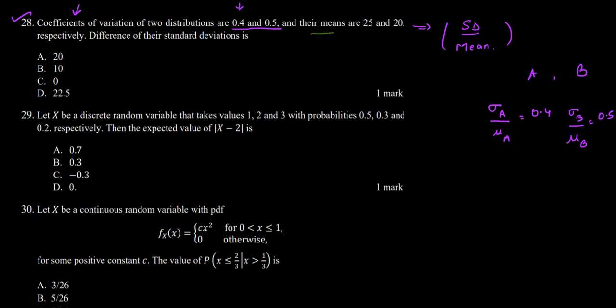Further reading the question: their means are 25 and 20 respectively, so we have been given the values of mu_A and mu_B. What we need to find is the difference of their standard deviations, Sigma_A and Sigma_B.